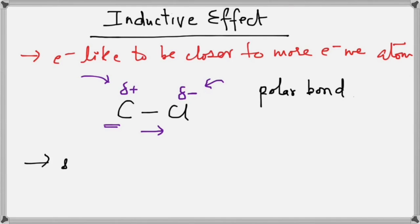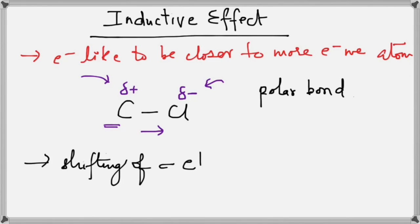This shifting of sigma electrons — sigma because this bond between the carbon and chlorine atom is a sigma bond — is what we call the inductive effect.